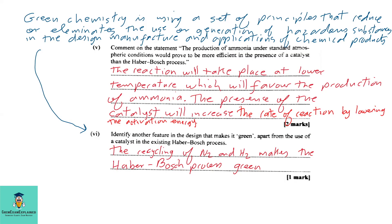Part 5: Comment on the statement: the production of ammonia under standard atmospheric conditions would prove to be more efficient in the presence of a catalyst than the Haber-Bosch process. So the reaction will take place at lower temperature which will favor the production of ammonia. We know that the presence of the catalyst will increase the rate of the reaction by lowering the activation energy.